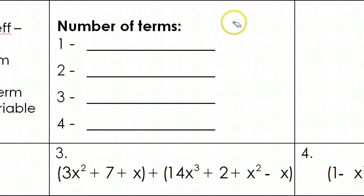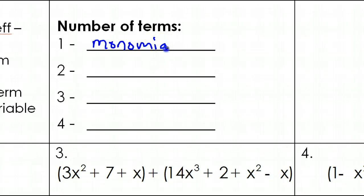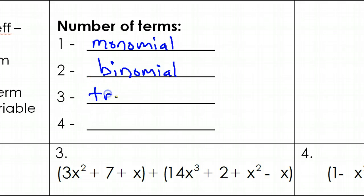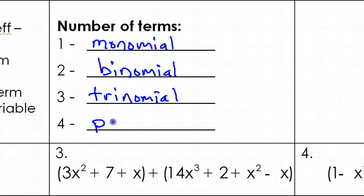We can also classify according to the number of terms. If there's just one term, it's a monomial. If there are 2 terms, it is a binomial. And if there are 3 terms, it is called a trinomial. For 4 and higher, we just go with polynomial.